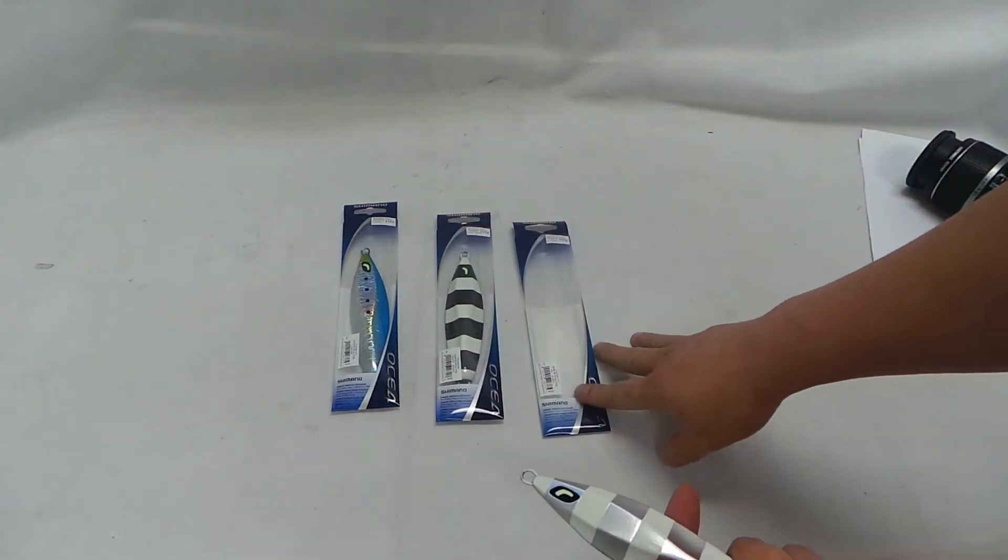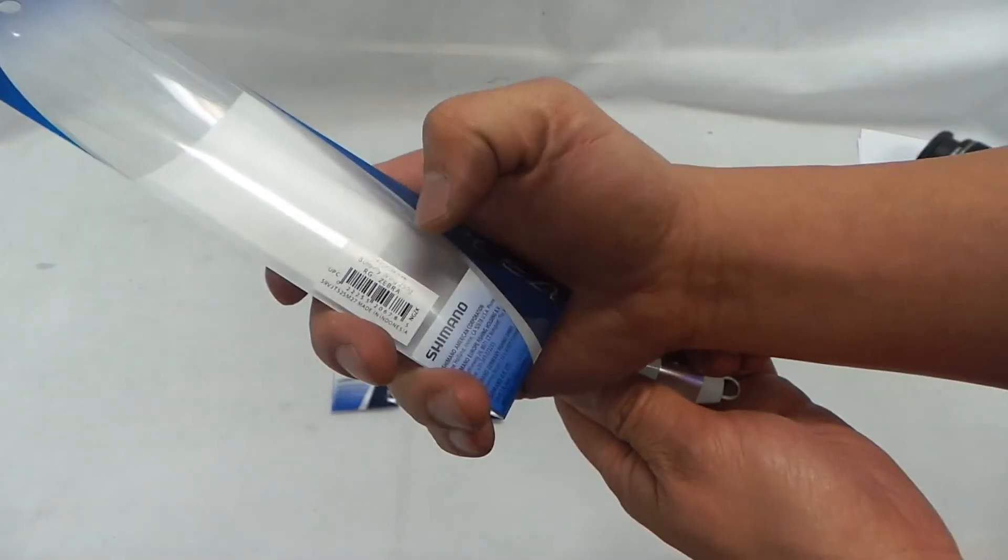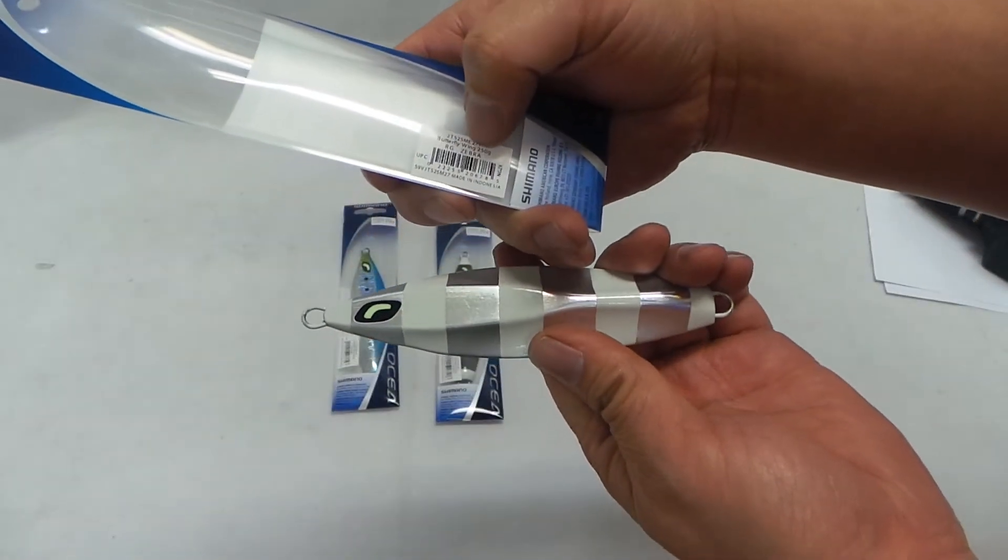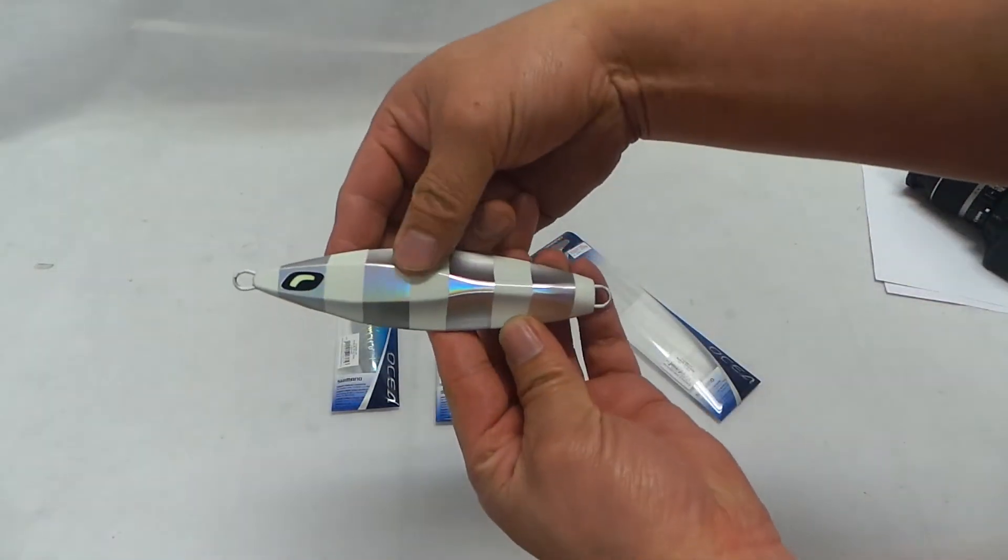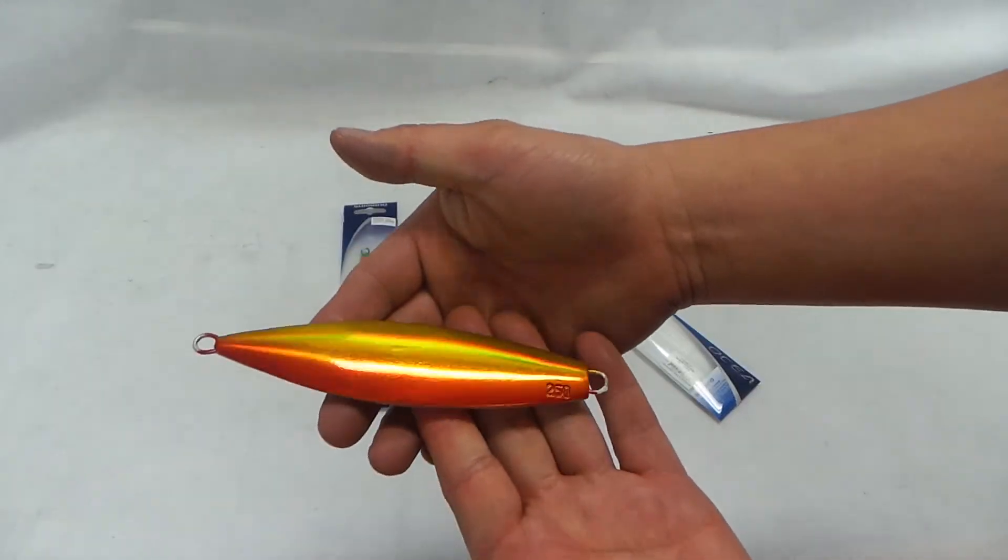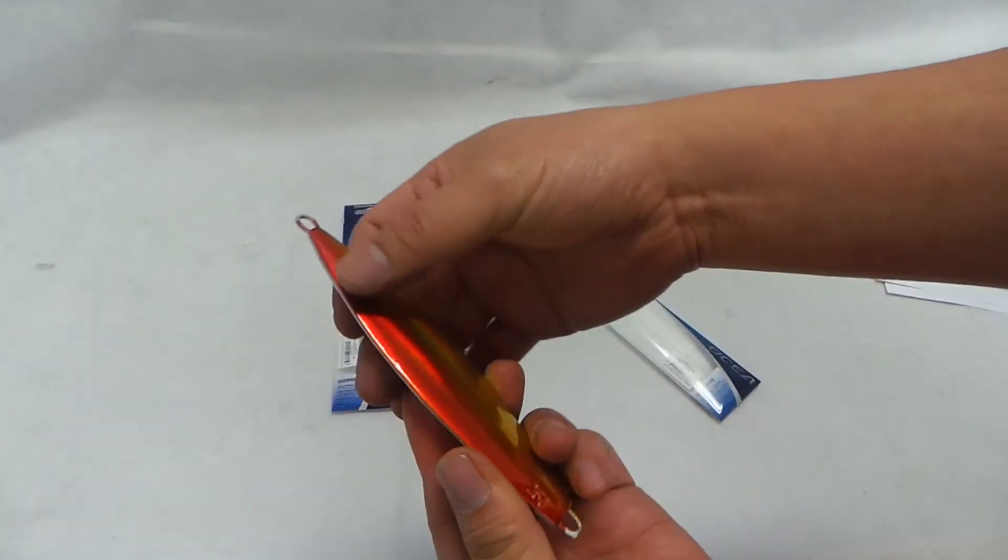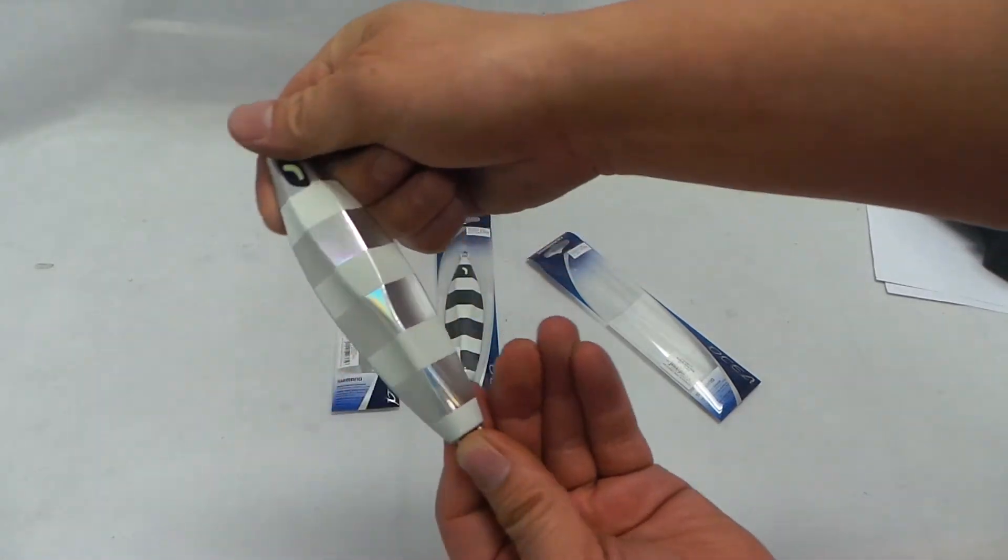Now we only got three colors in. So this one that I'm showing you is color RG Zebra. Okay, so here you see the zebra stripe. But the other side is gold. It's called red gold, so that's where the RG is. Red gold zebra.